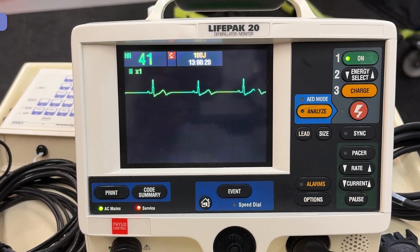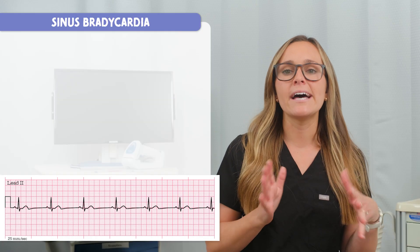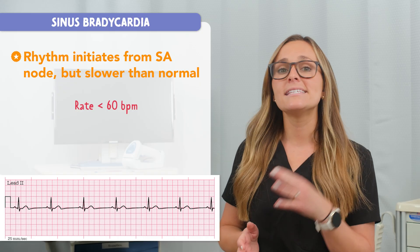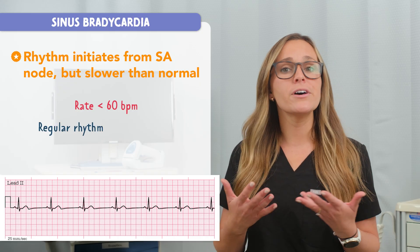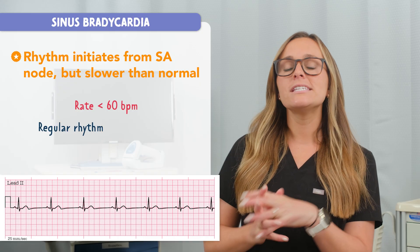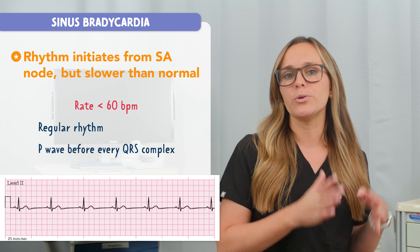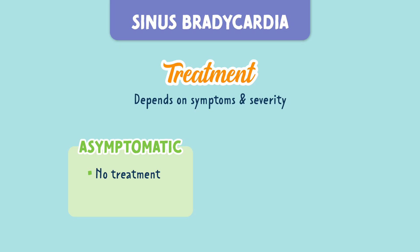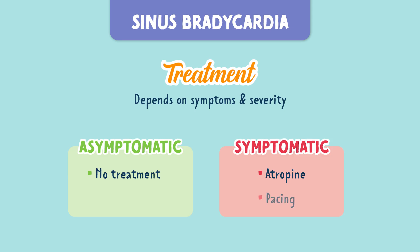This is sinus bradycardia, a rhythm that comes from the SA node but slower than normal. The heart rate is less than 60 beats per minute, but the rhythm is still regular, and you'll see a P wave before every QRS complex. If the patient is asymptomatic, we typically don't treat it — some people, like athletes, naturally have a lower heart rate. But if they're symptomatic — think dizziness, hypotension, or chest pain — we treat it with atropine first, and if that doesn't work, we consider pacing.